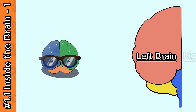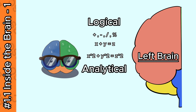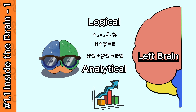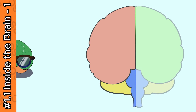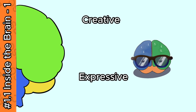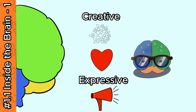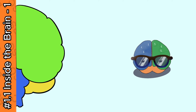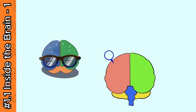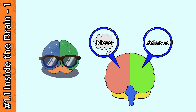The left brain is logical and analytical, responsible for processing numerical and logical decisions. The right brain is creative and expressive, responsible for generating creative ideas, processing emotions, and speech. These two polar opposite functions of the brain develop a complex and unique concoction of ideas and behaviors that together make up our personalities.